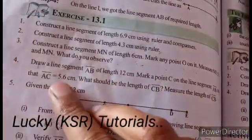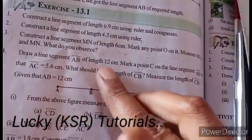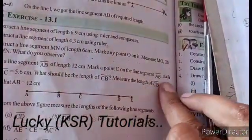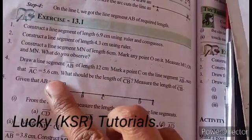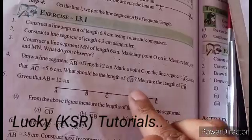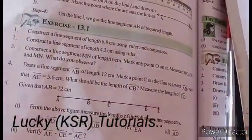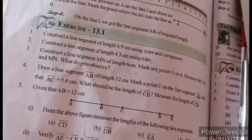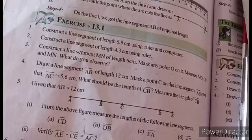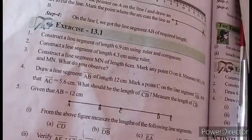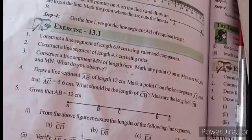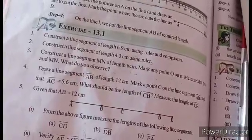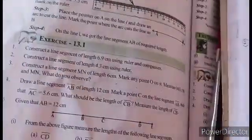Draw a line segment AB of length 12 cm. Mark a point C on the line segment AB such that AC is equal to 5.6 cm. What should be the length of CB? Measure the length of CB. AB is equal to 12 cm. AC is equal to 5.6 cm, and CB is equal to 6.4 cm.